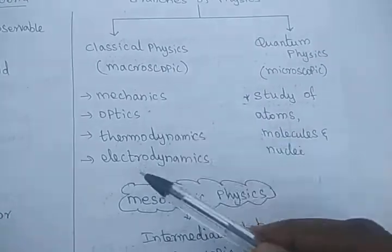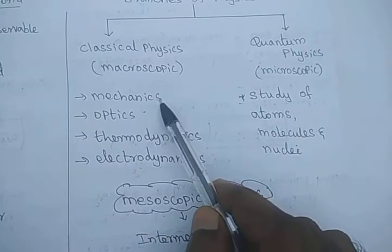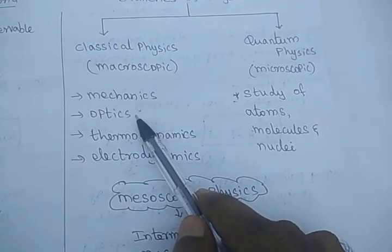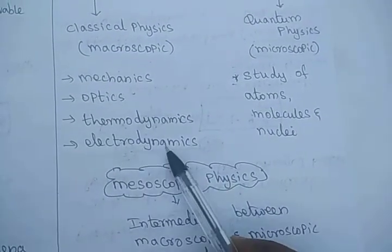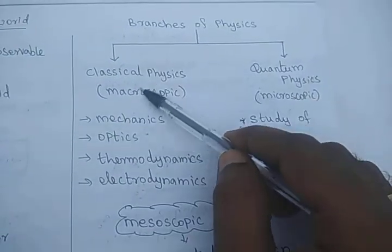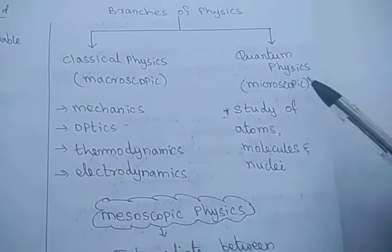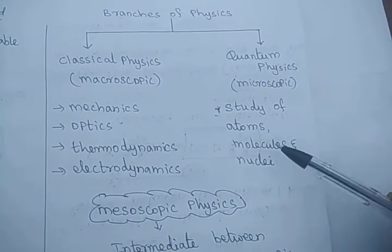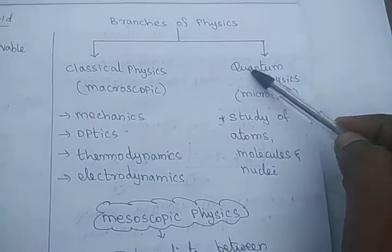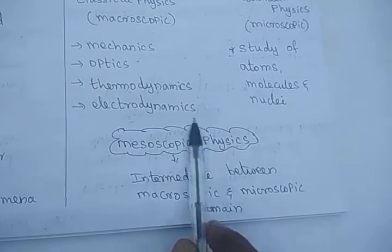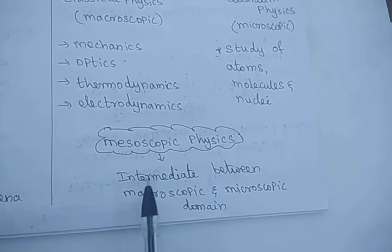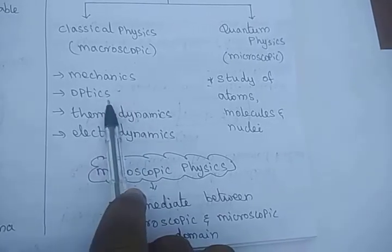We have already studied in lower classes: mechanics — the study about the motion of bodies; optics — the study about light; thermodynamics — the study about heat; and electrodynamics — the study about charges. These all come under the classical physics category. The study about atoms, molecules, nuclei, protons, electrons, and neutrons is called quantum physics. Nowadays, scientists have classified a new branch called mesoscopic physics, which is intermediate between the macroscopic and microscopic categories.